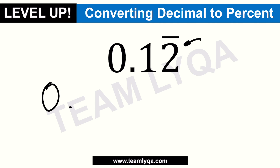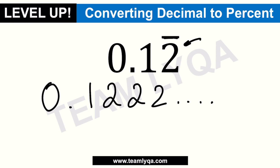So 0.12 with a bar over the 2 means 0.122222... The 1 appears only once, but the 2 — wherever the bar is placed — repeats. Only the 2 repeats.